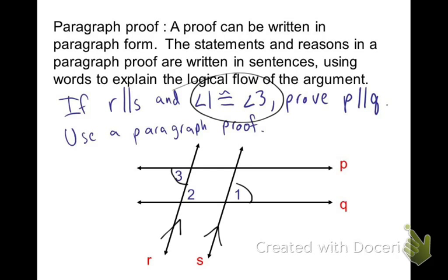Well, if angle 2 is congruent to angle 1, then the lines are parallel. Because if corresponding angles are congruent, the lines are parallel.